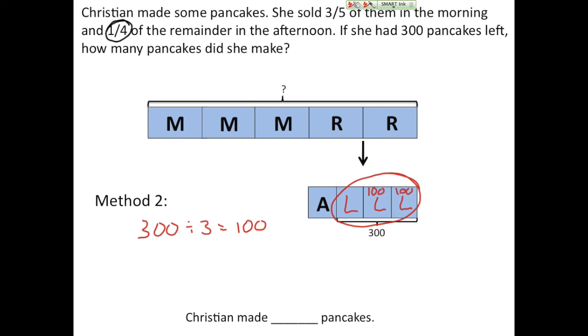So now if I look up top, well, if these are 100 each all together, they represent 200 pancakes. So that means that one of these units up here is 200. And so since they're equal units, each unit is 200 in the first bar model.